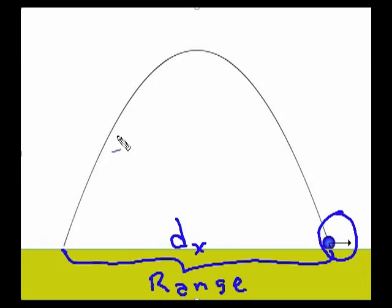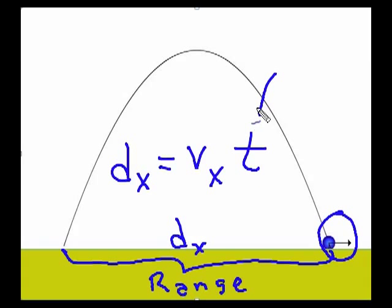And since the velocity is absolutely constant, d sub x distance is velocity times time, the sideways velocity, the horizontal component times t, the total time that projectile has been in flight.